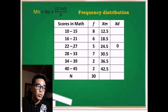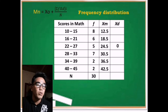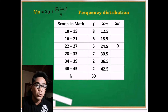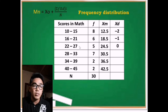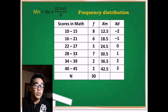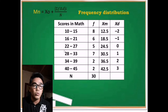All class intervals less than the third row (22 to 27) will take negative deviation values, and those that exceed it will take positive values. So the deviations are: negative 2, negative 1, zero, positive 1, positive 2, and positive 3.